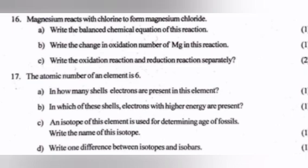Question 16: Magnesium reacts with chlorine to form magnesium chloride. A. Write the balanced chemical equation of this reaction. B. Write the change in oxidation number of magnesium in this reaction. C. Write the oxidation reaction and reduction reaction separately.